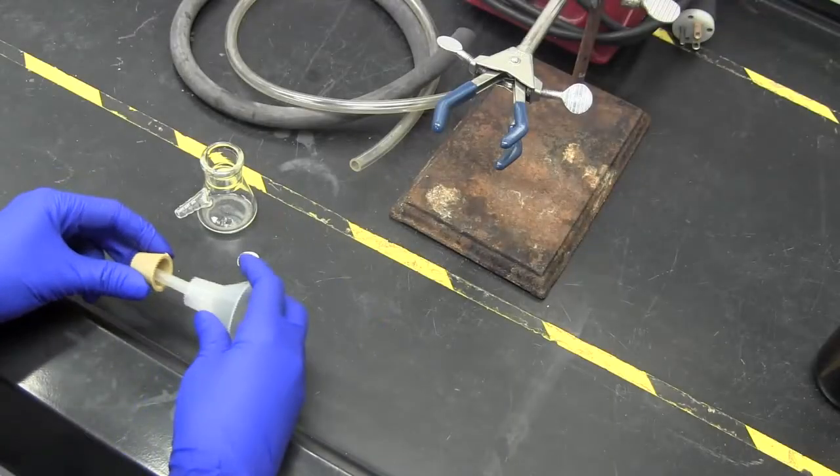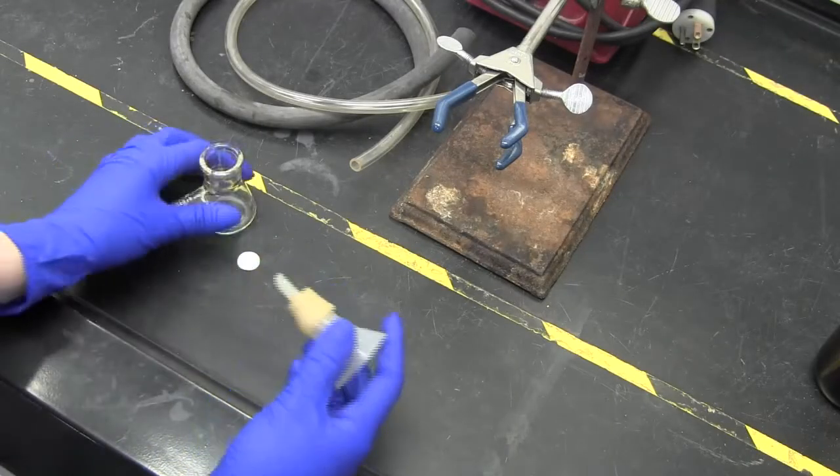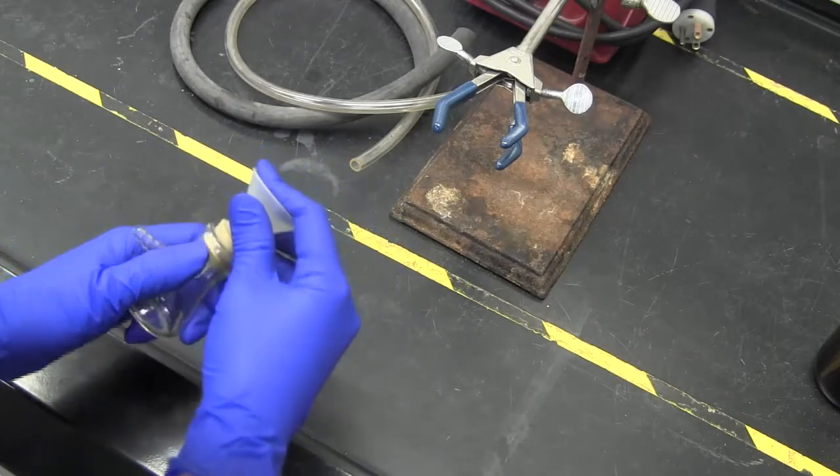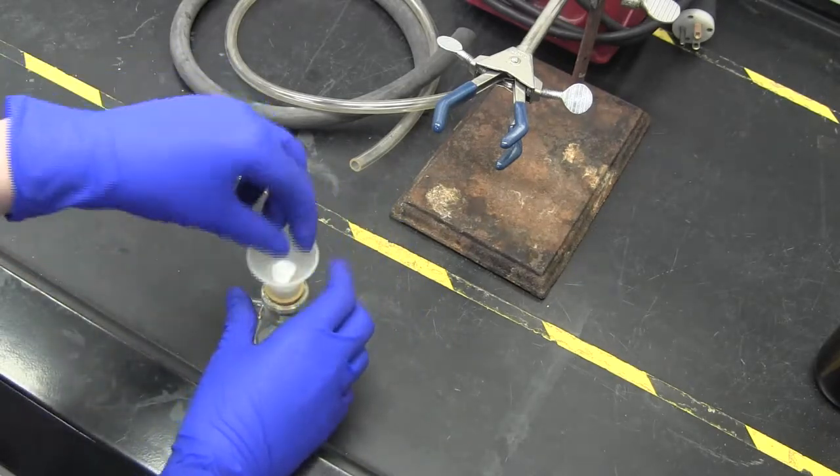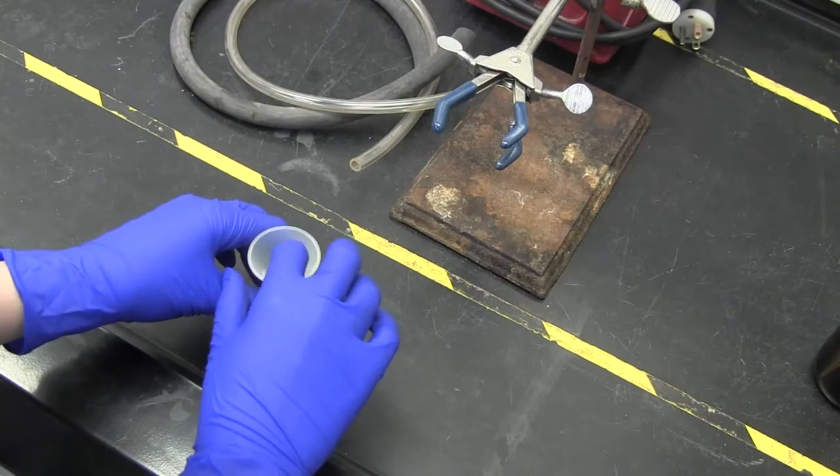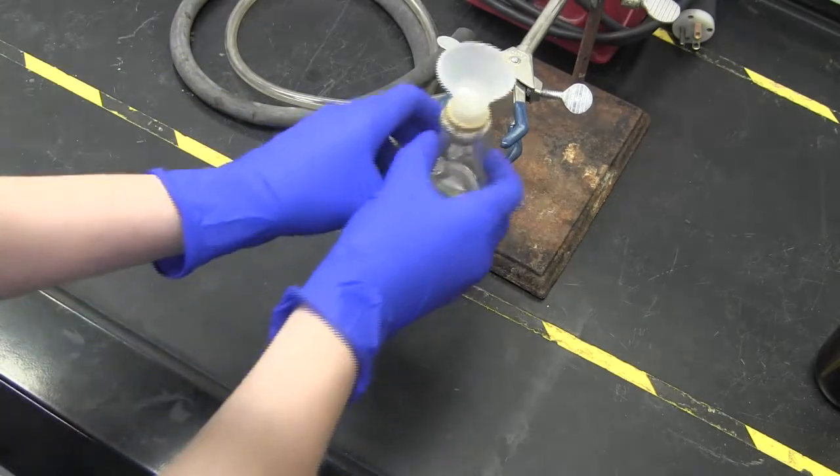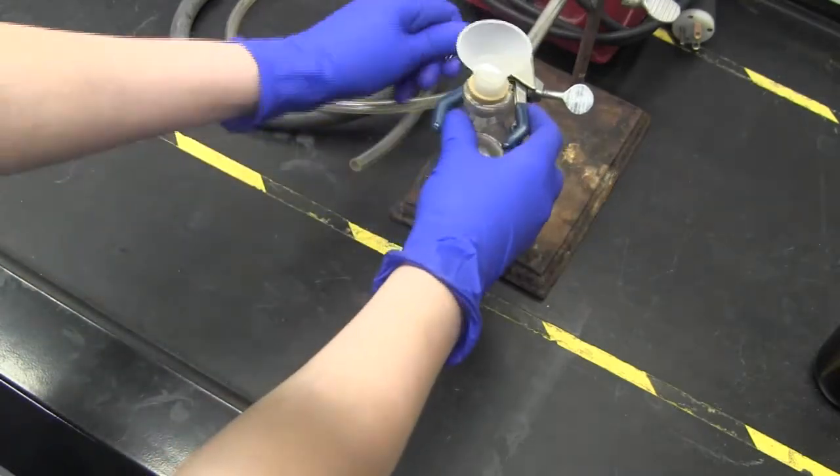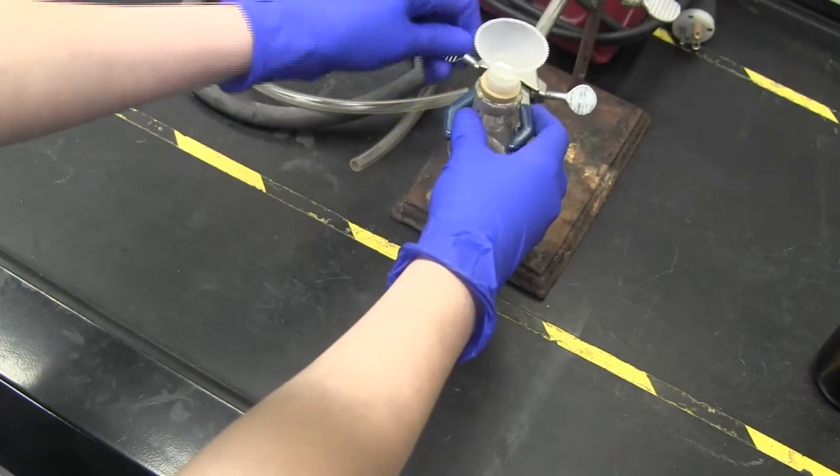Begin by fitting the Hirsch funnel into the filtration flask. The rubber connector will help them stay together snugly. Place the filter paper on the top of the frit in the funnel and wet the filter paper with the solvent you are using. Then clamp the apparatus into a ring stand so it does not tip over while filtering.